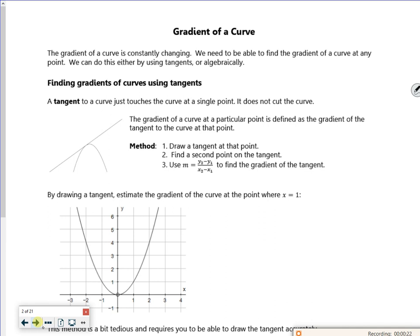So it says the gradient of the curve is constantly changing, so it's not a straight line, it's a curve. So I need to be able to find the gradient of the curve anywhere. And we can either use finding value by creating tangents or doing it algebraically.